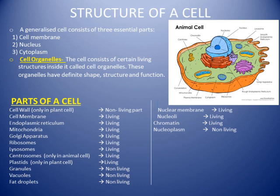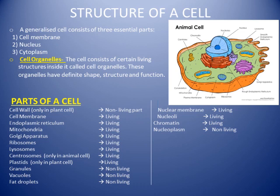Just as the human body has organs like the lungs, heart, intestine, and stomach — each with a particular shape, structure, and function — a cell also has certain organelles that perform specific functions. We call them 'cell organelles' rather than 'cell organs' because the cell itself is microscopic, and its organelles are much smaller still. Cell organelles means 'little organs of the cell.'